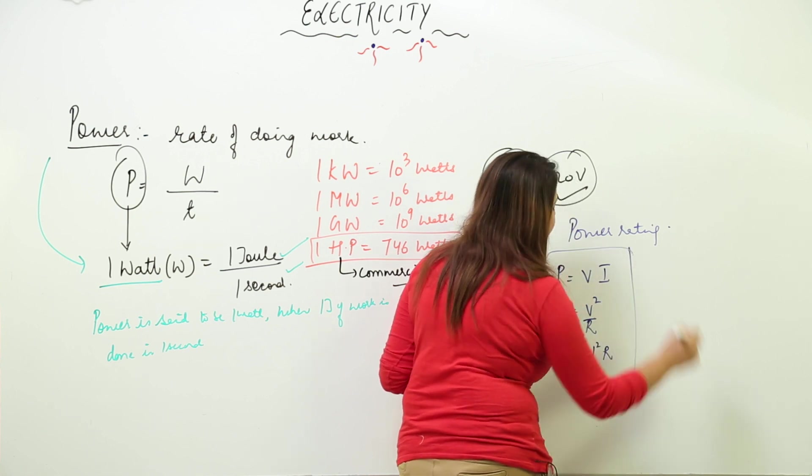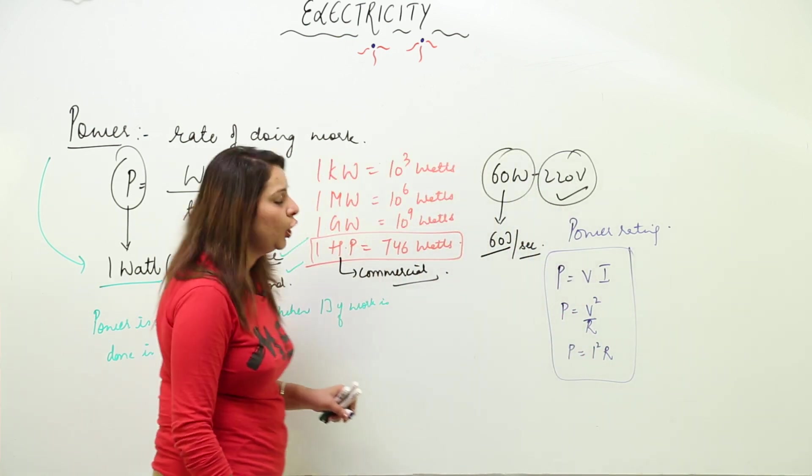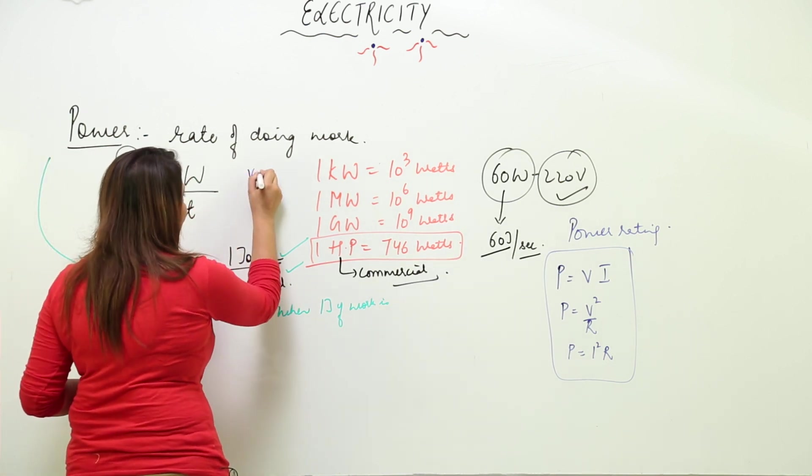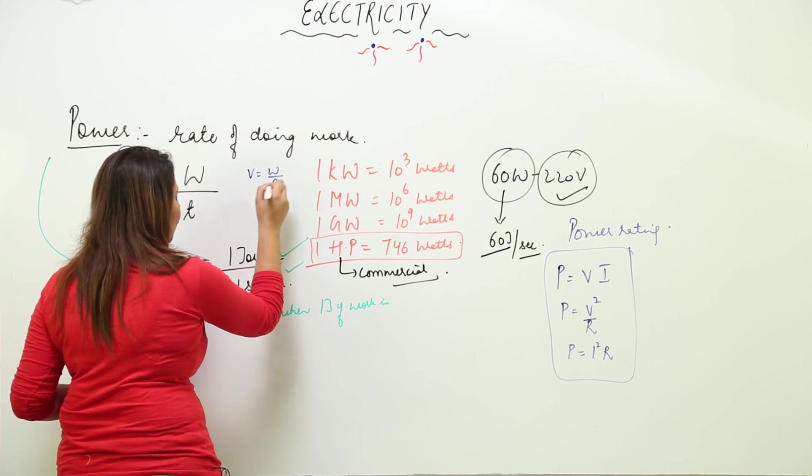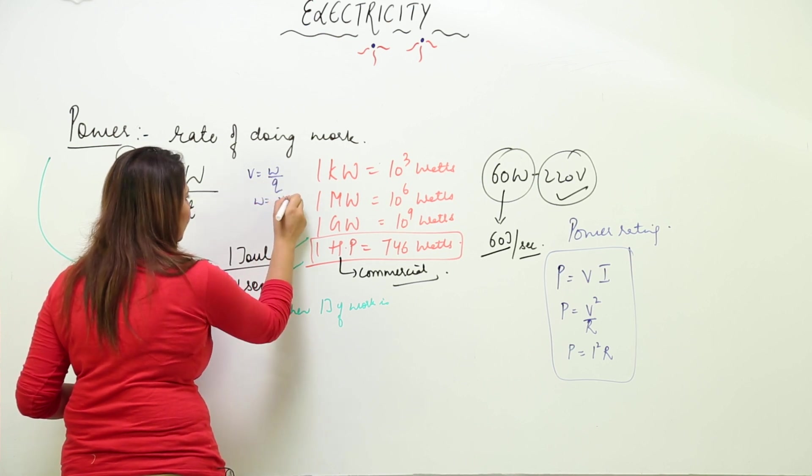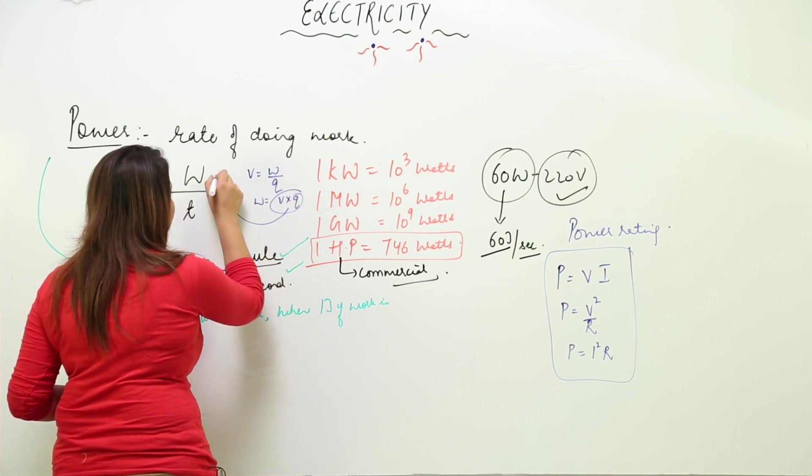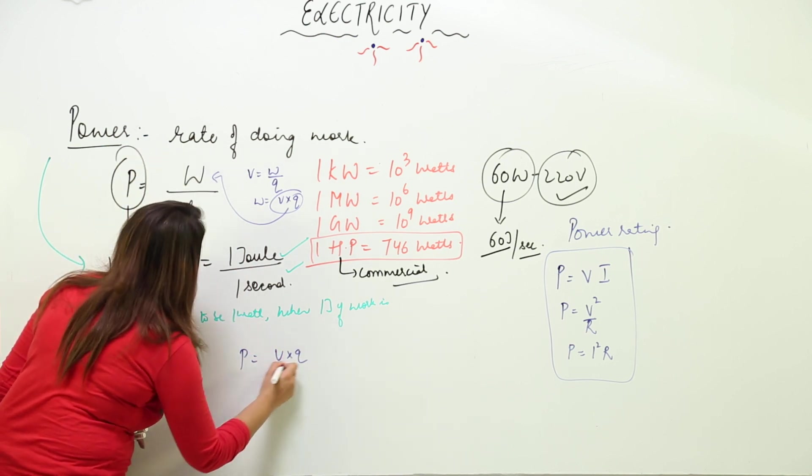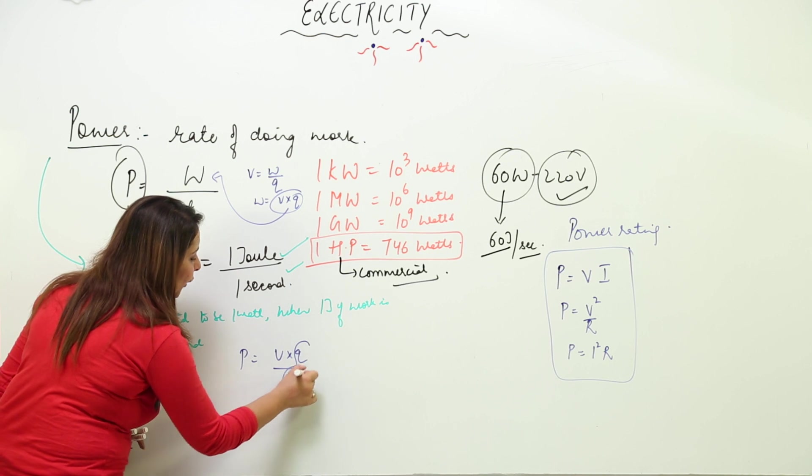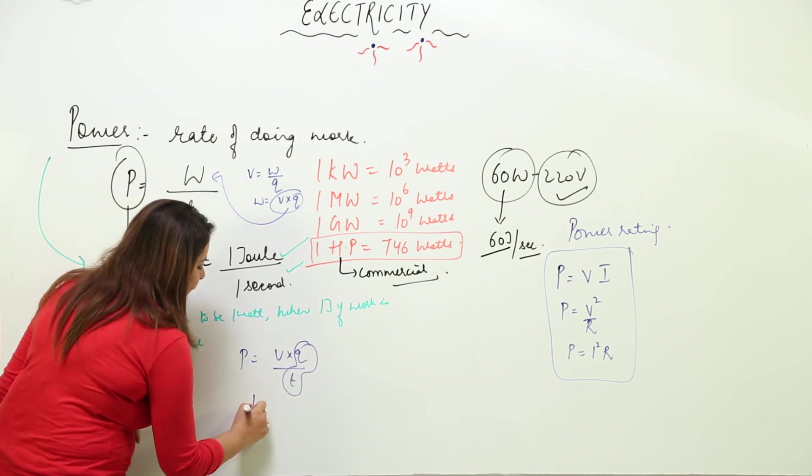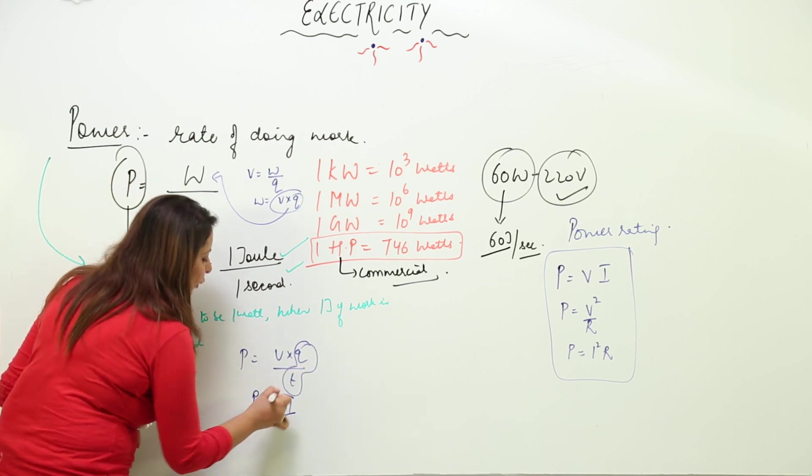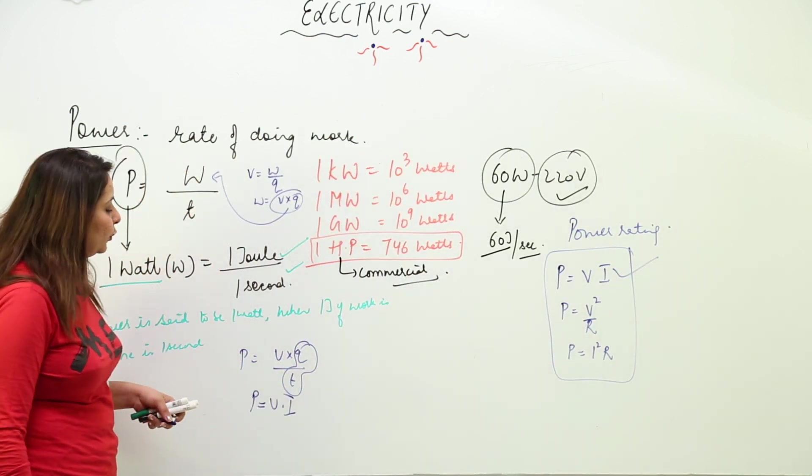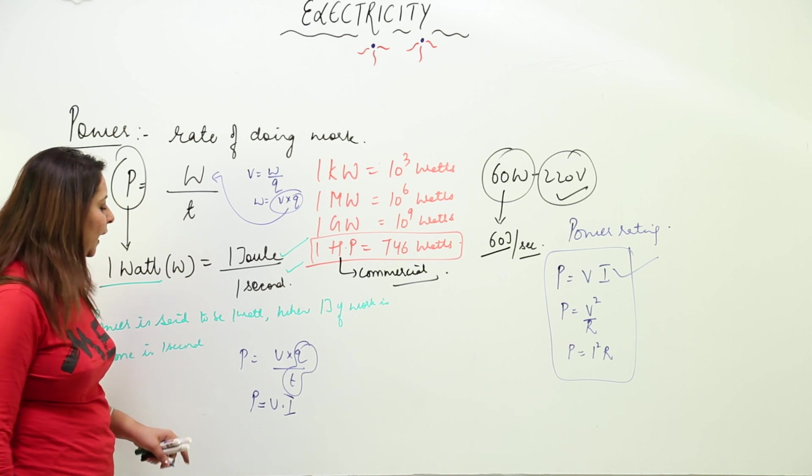These formulas are derived using Ohm's law. Let me solve one: W = V × Q, so P = W/t = VQ/t. Since Q/t = I, we get P = V × I.